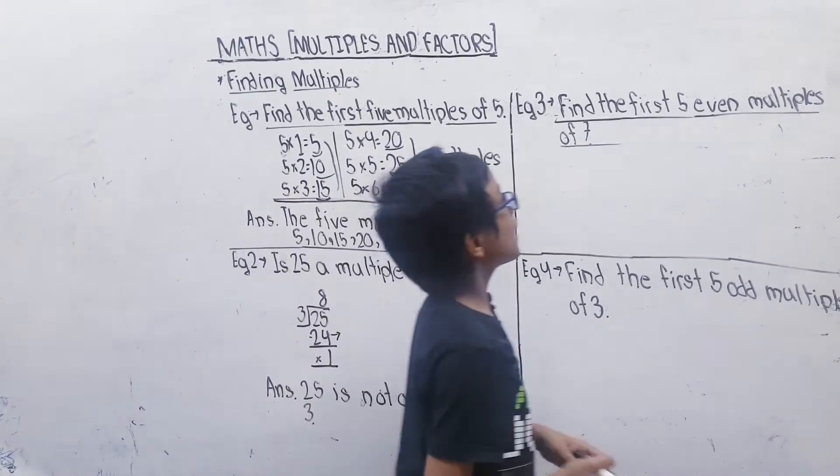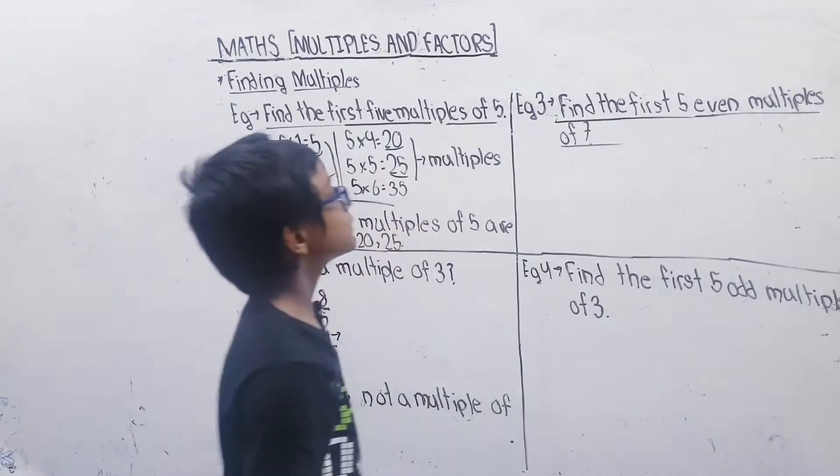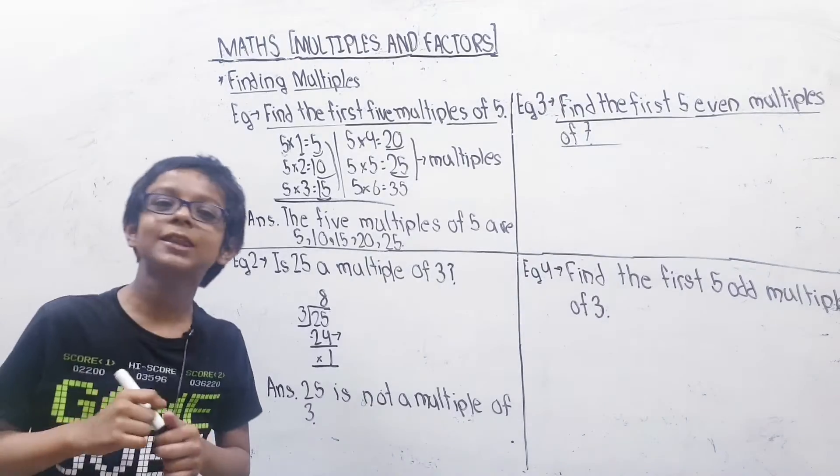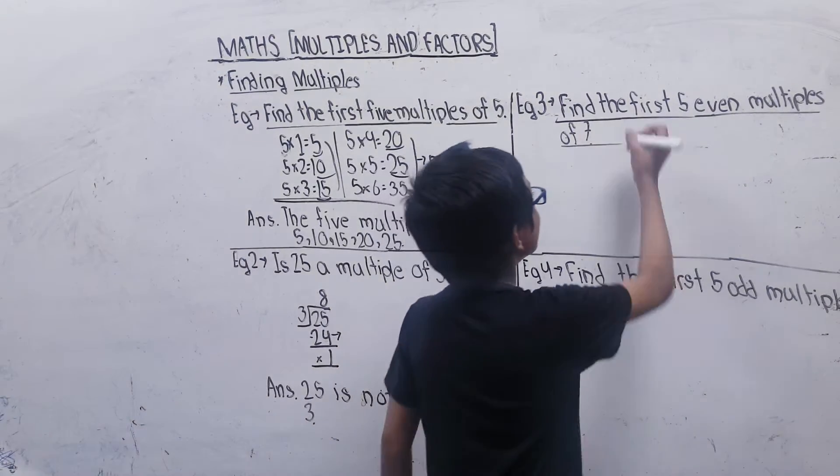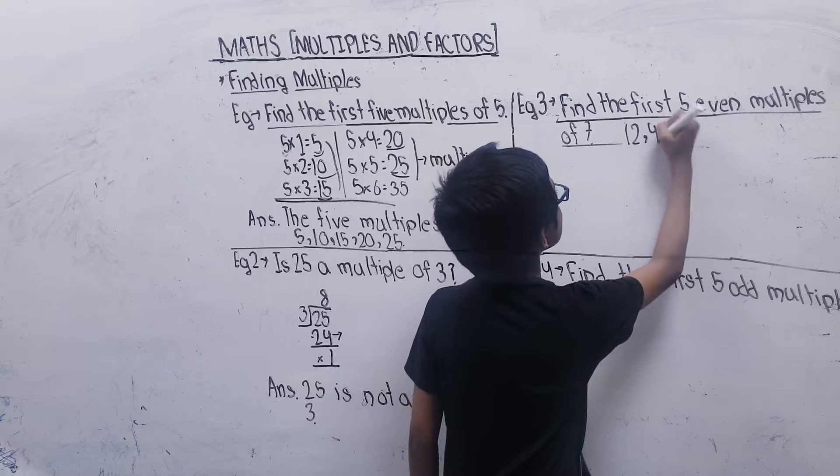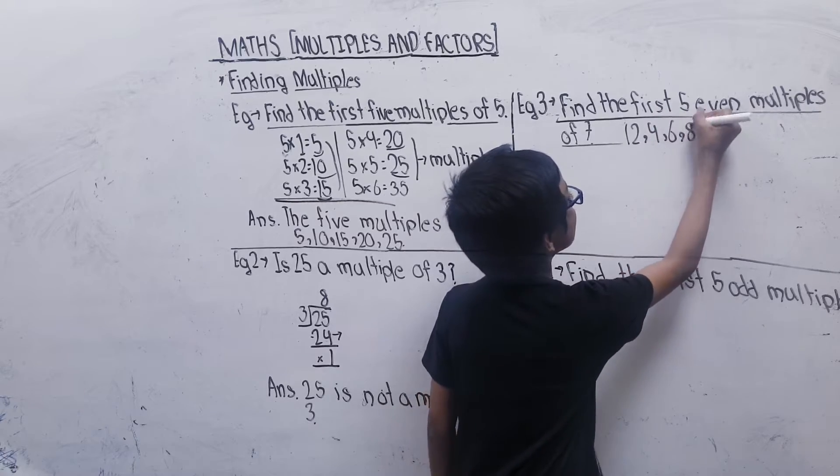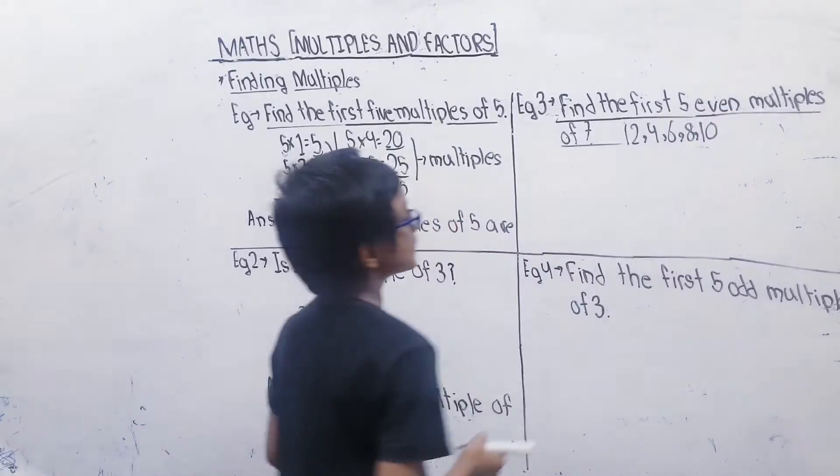Example three: Find the first five even multiples of 7. We have to look at 7's multiples but we have to look at even numbers: 2, 4, 6, 8, 10, 12, 14, 16, 18, 20.